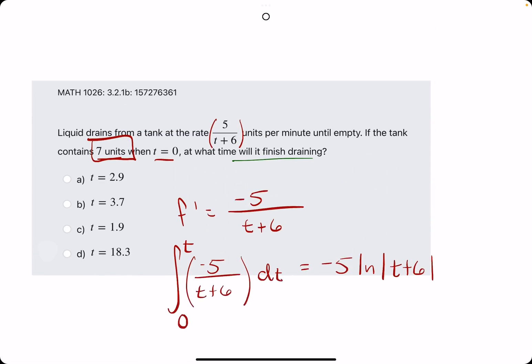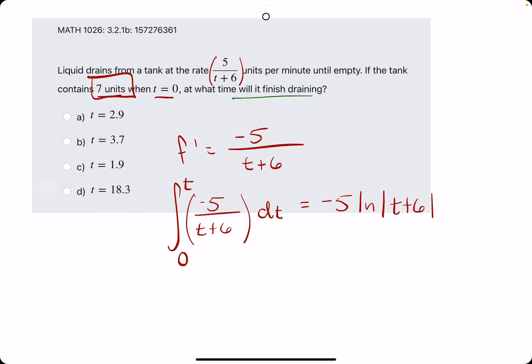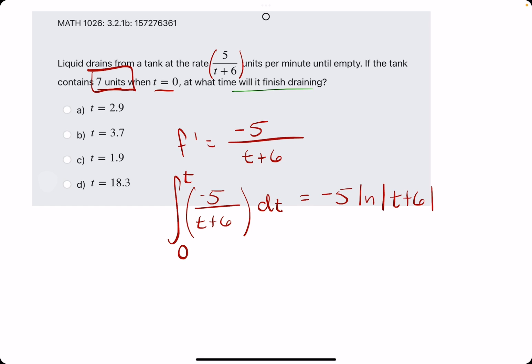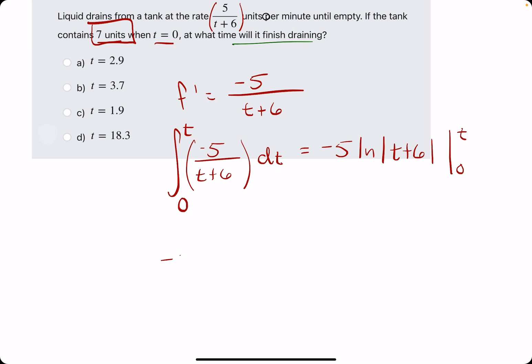Negative five becomes the coefficient in this case, so we have negative five ln of t plus six and the absolute value, evaluated from zero to t. We'll have negative five ln of t plus six. Assuming that t is a positive time value, which it should be, we can sort of drop the absolute value bar, so no need to worry about them here. Then we are subtracting what we get when we plug in zero.